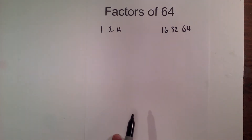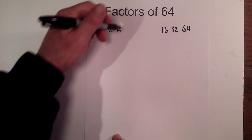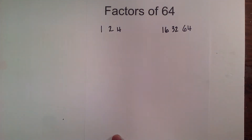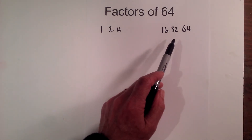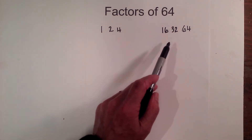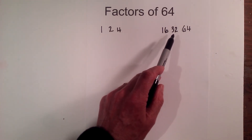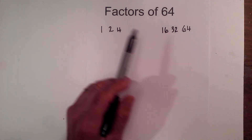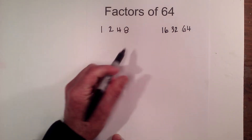For 7, it really helps to know the multiplication table for 7, but 7 does not go into 64. Finally, does 8 go in? The rule for 8 is: divide the number twice by 2, and if the result is even, it's divisible by 8. So 64 divided by 2 is 32, and 32 divided by 2 is 16 — that's even, so yes, 8 goes in.